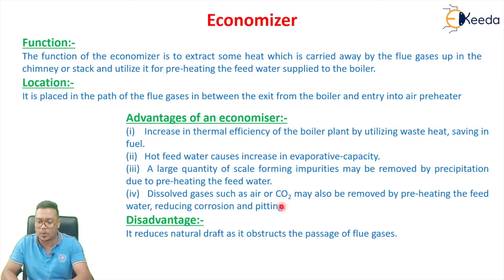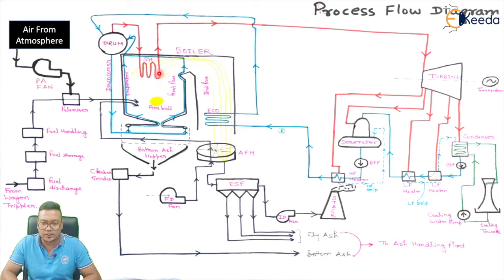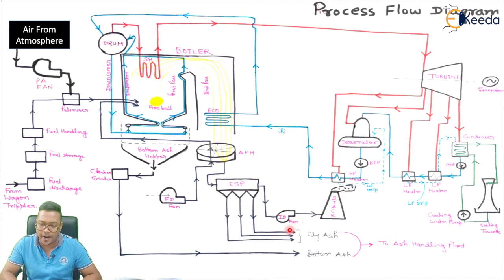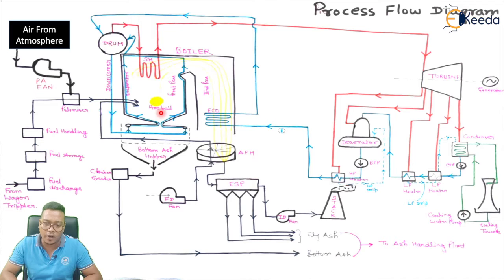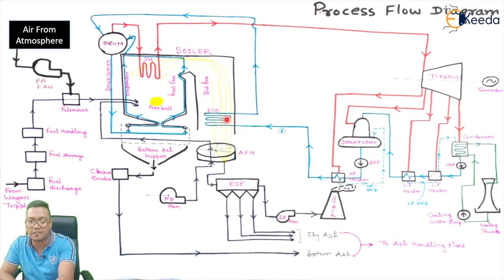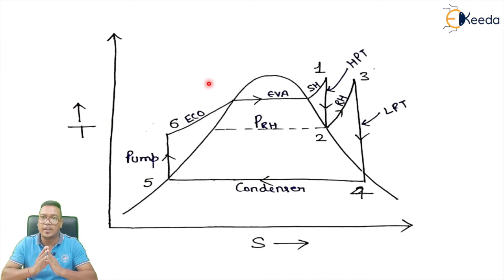What is the disadvantage of the economizer? Suppose the flue gas is flowing and the economizer is placed in its path — it increases the pressure loss. In a natural circulation system with no ID fan and no FD fan, this economizer increases the pressure loss of the flue gas as it flows through the second pass. This is the disadvantage of the economizer.